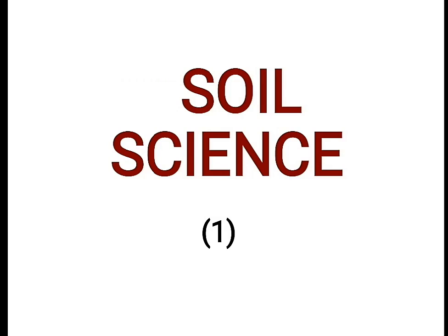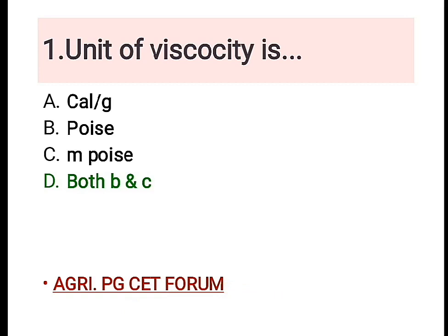Warm welcome to all the aspirants. This is our second session of forum on soil science, so let's dive into the amazing world of soil science. This is our first question: the unit of viscosity. The right answer is D — both B and C — which is the poise and milli-poise. Viscosity is the friction between two molecules of the fluid.